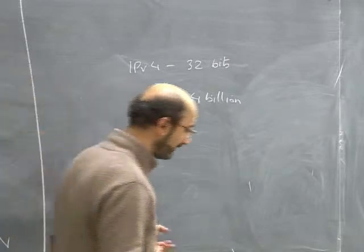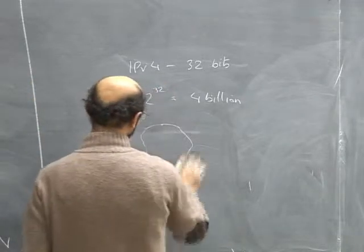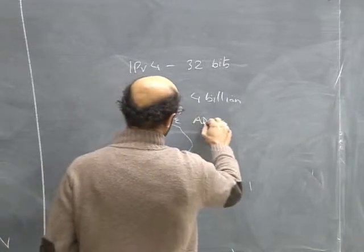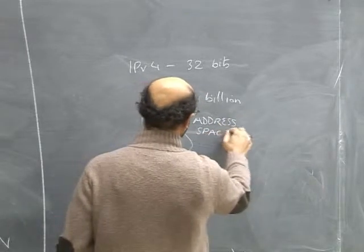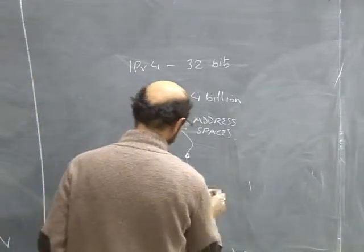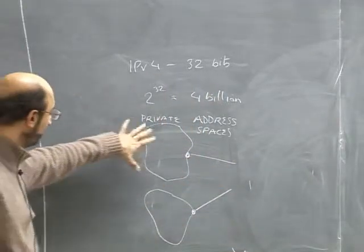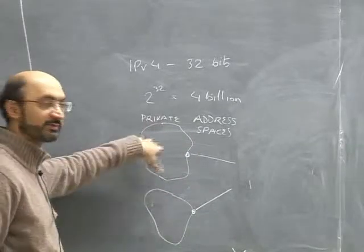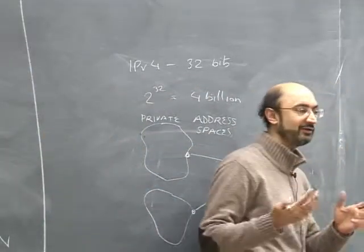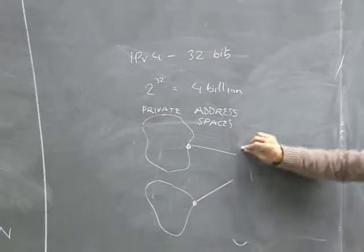The answer to the address shortage is that we reuse the same address more than once, using what we call private address spaces. The private address spaces reuse the same address over and over again, and they all share a single public address. We have to make sure these private addresses don't leak out of the private address space into the Internet core.